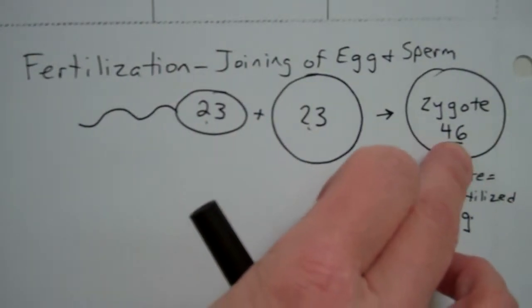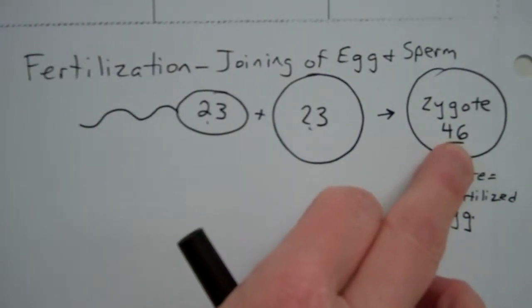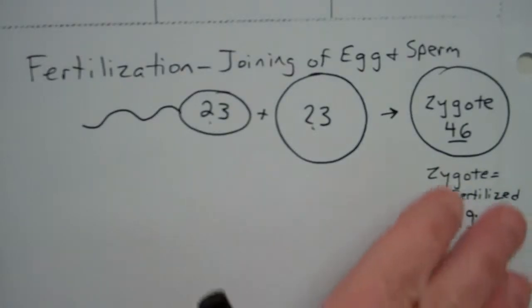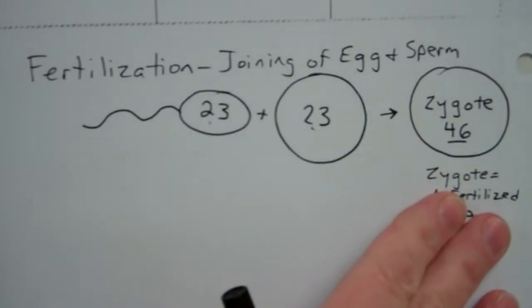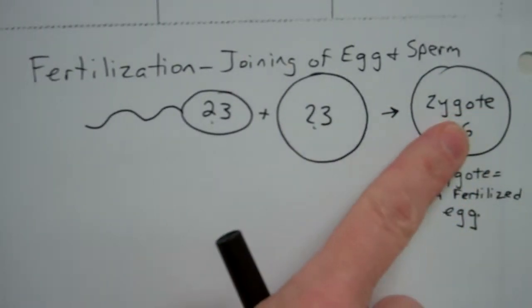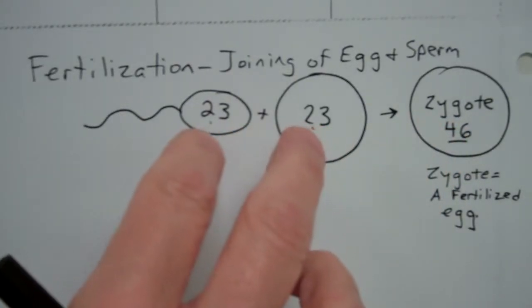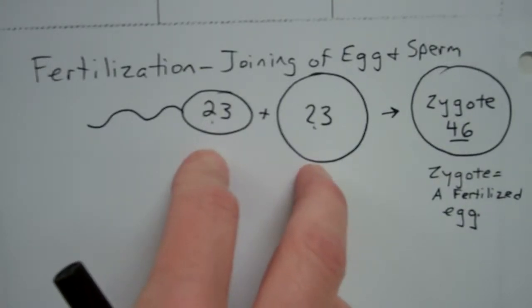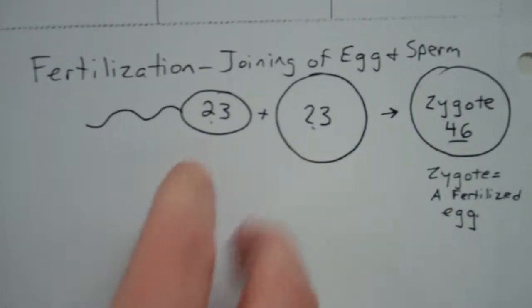Again, you could look in the microscope and say, oh, there's a chromosome two, and there's the other chromosome two. Again, because one of them came from mom and one came from dad. So what I'm trying to get at is that a zygote actually has two of every kind of chromosome, whereas these sex cells have only one kind of every chromosome.